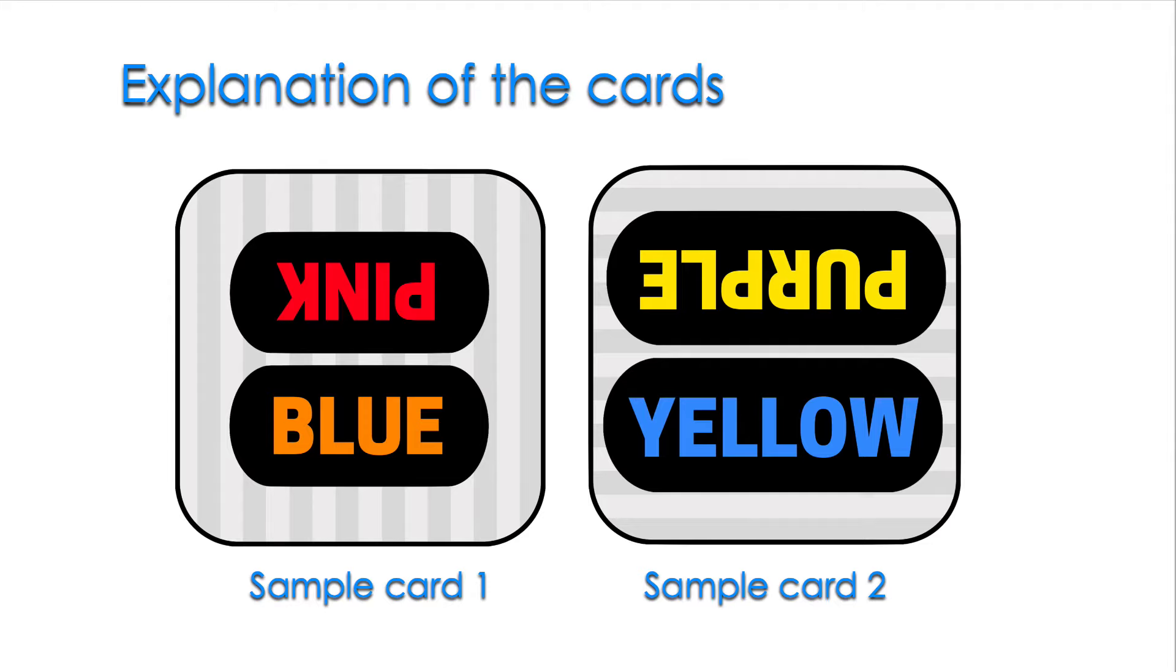Now let's look at sample card two. Again, we focus on the bottom word. This time, the lines in the background are horizontal. This tells us to read what the word says. The answer to this card is yellow.